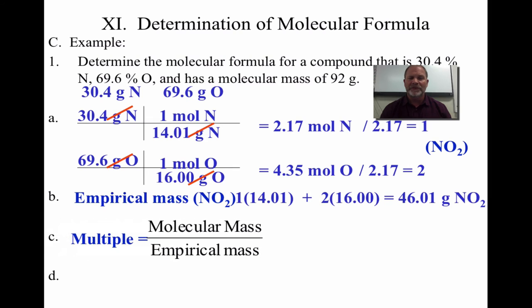So I'm going to take my 92 and divide it by my 46.02, and I'm going to get the multiple of 2.